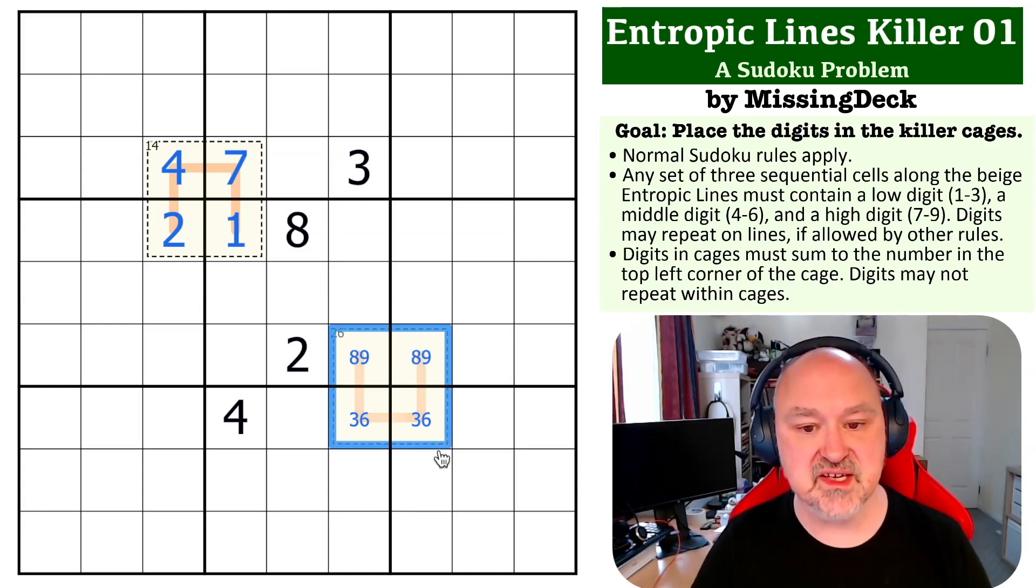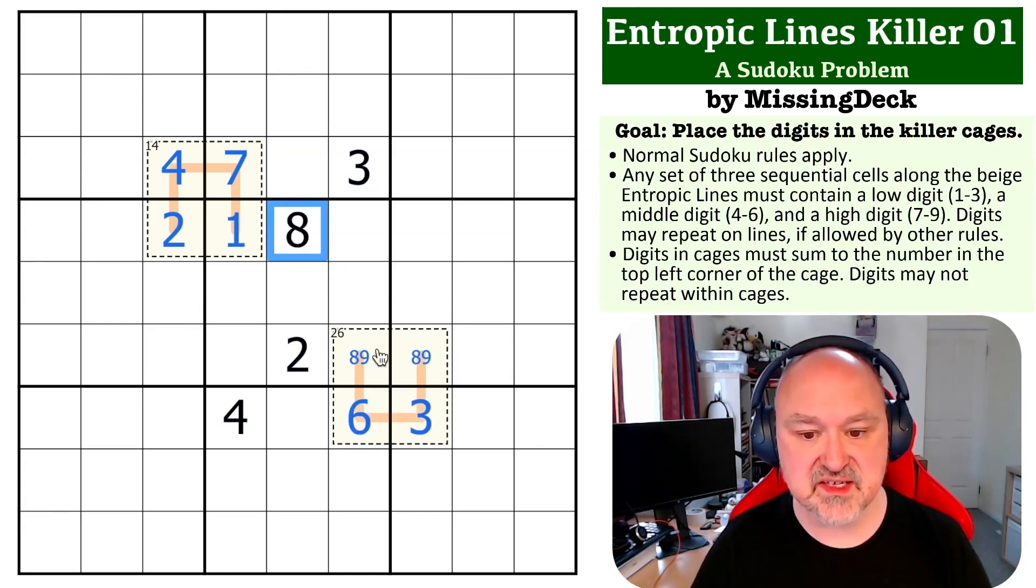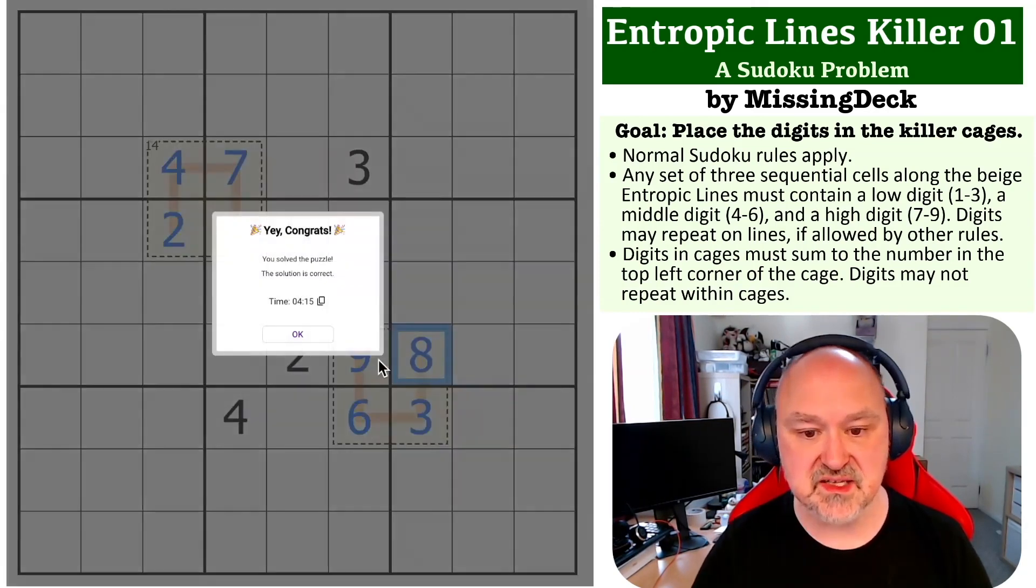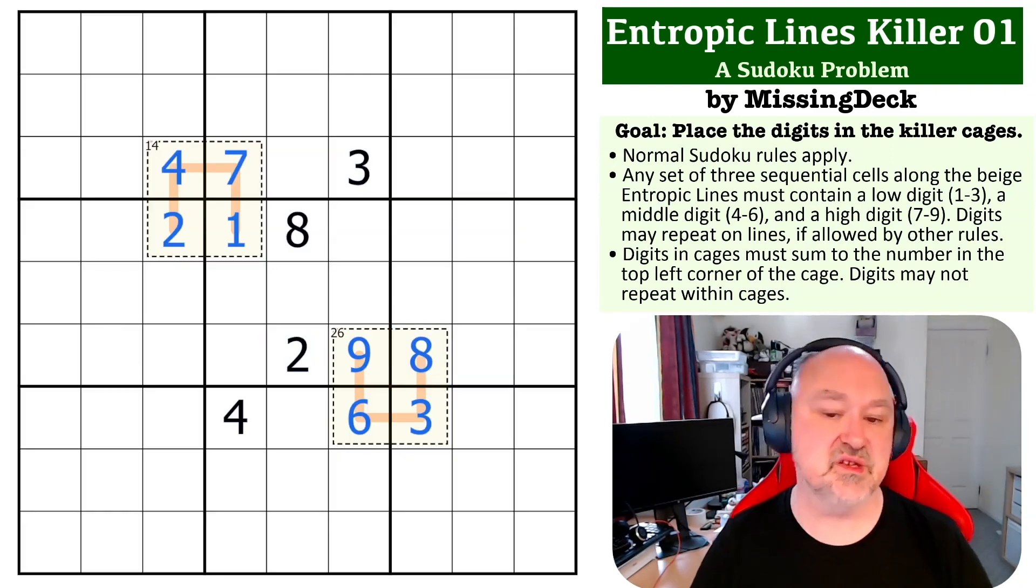So this is forced to be three, six, eight, nine. This three makes this the six, which makes this the three. This eight makes this the nine, which makes this the eight. And that is the solution to this particular problem.